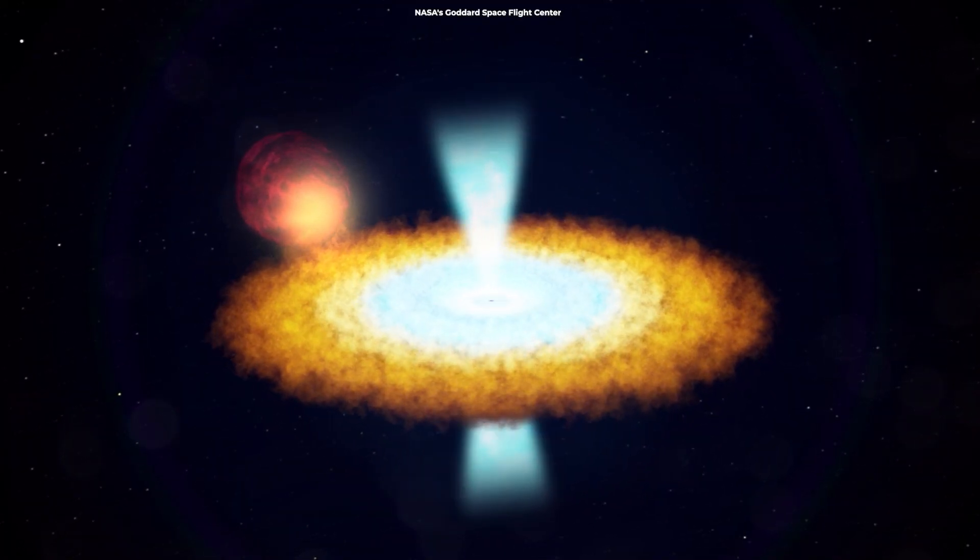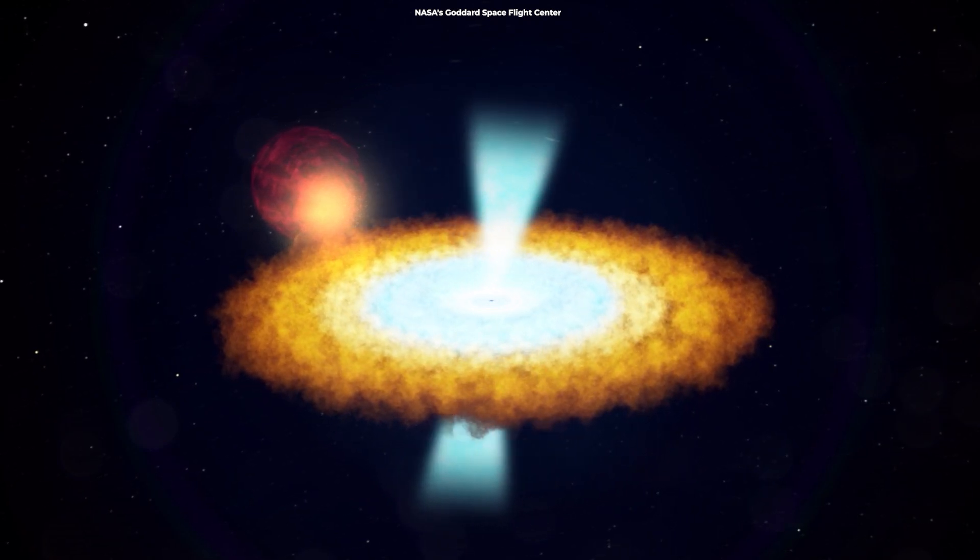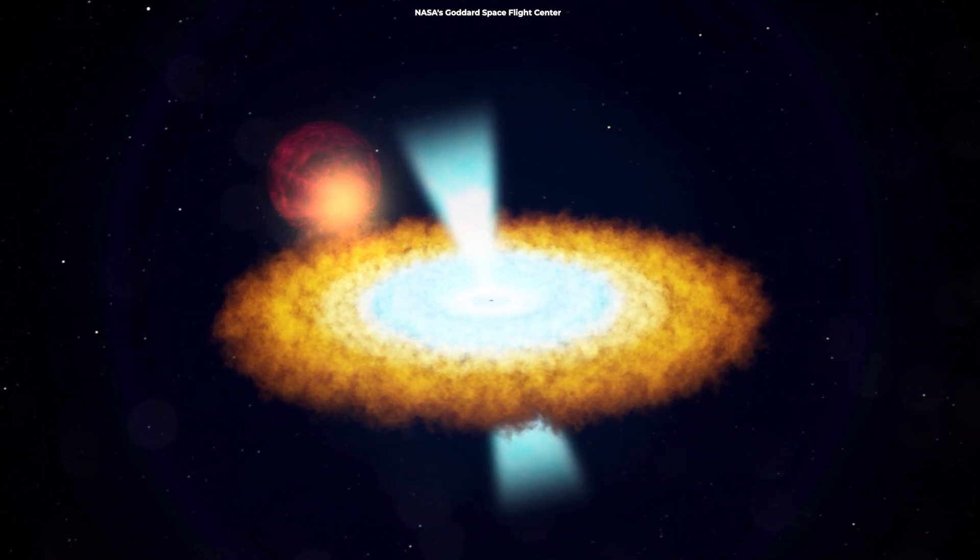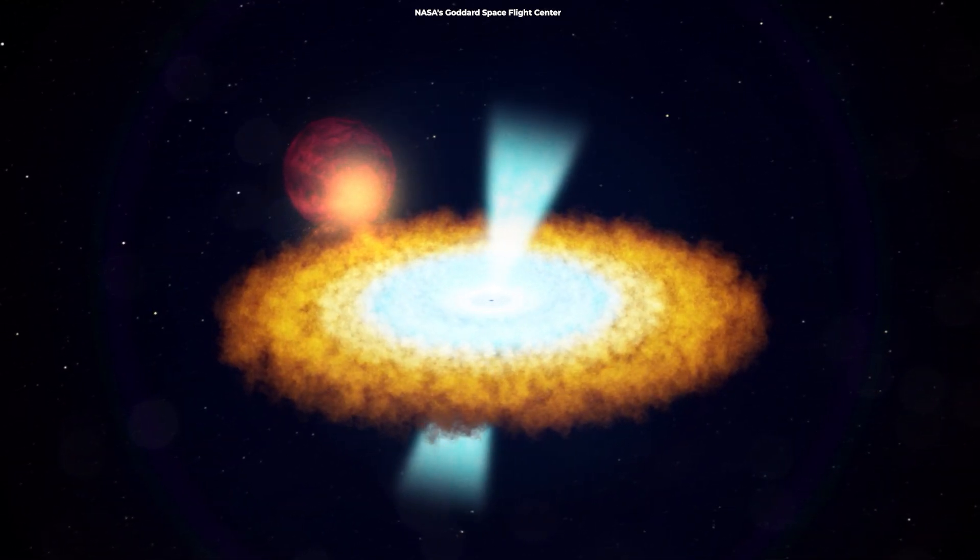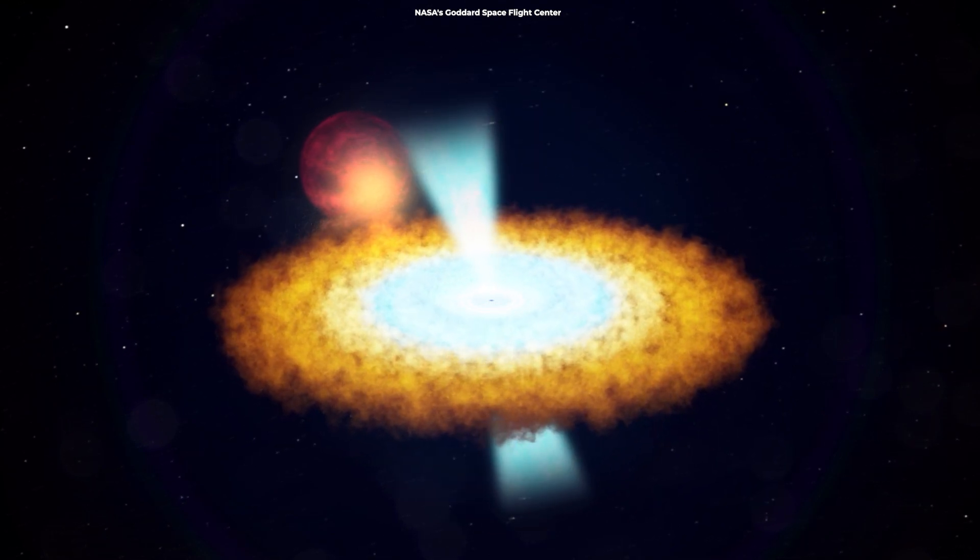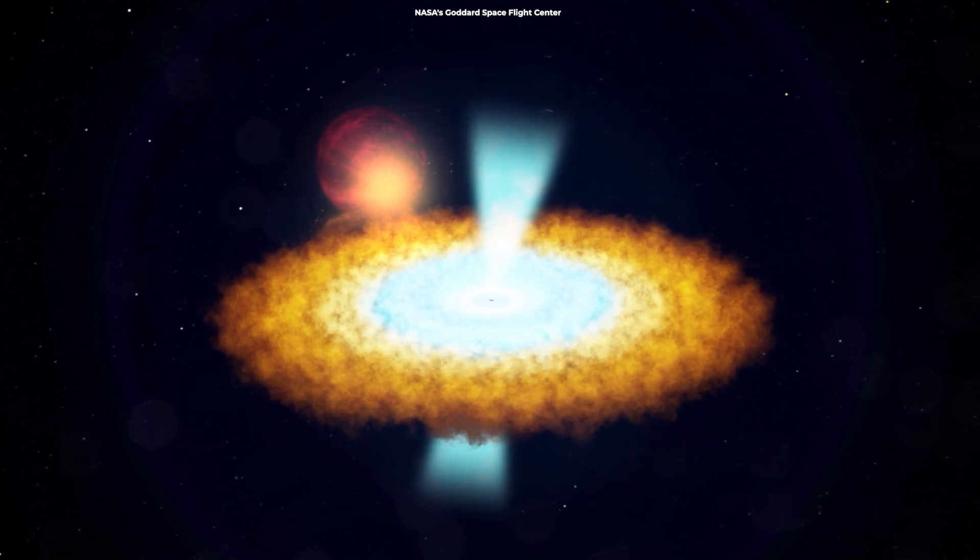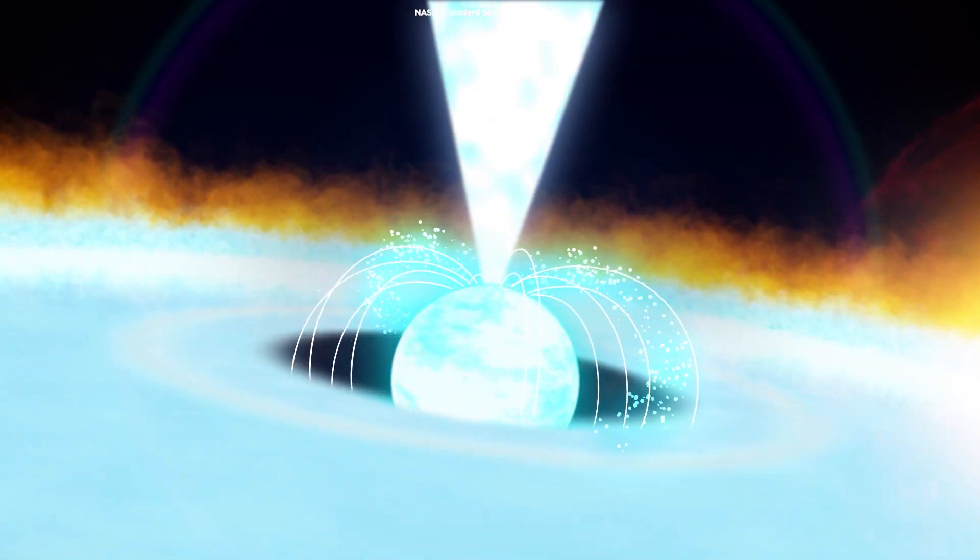These luminous systems contain a neutron star or black hole that pulls gas from a closely orbiting companion star. The material near the neutron star or black hole becomes superheated and glows in X-rays.